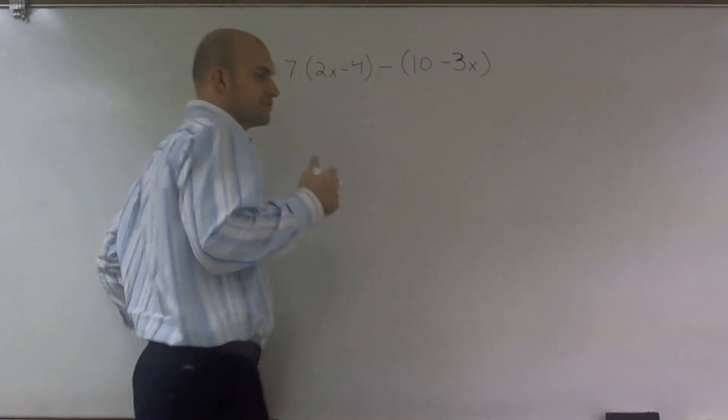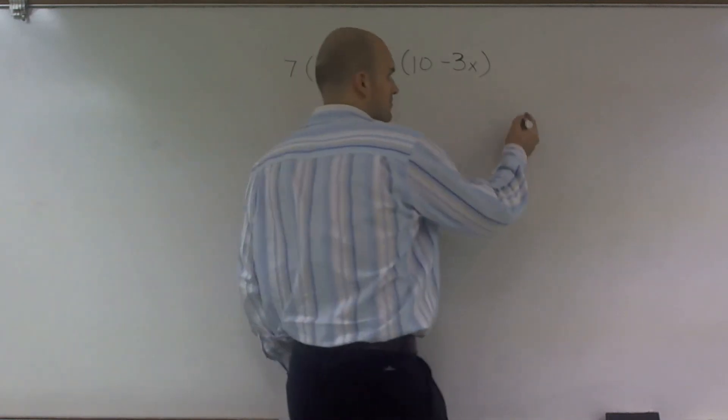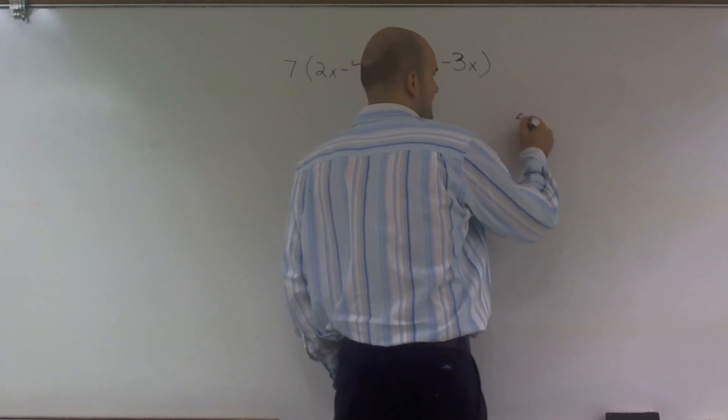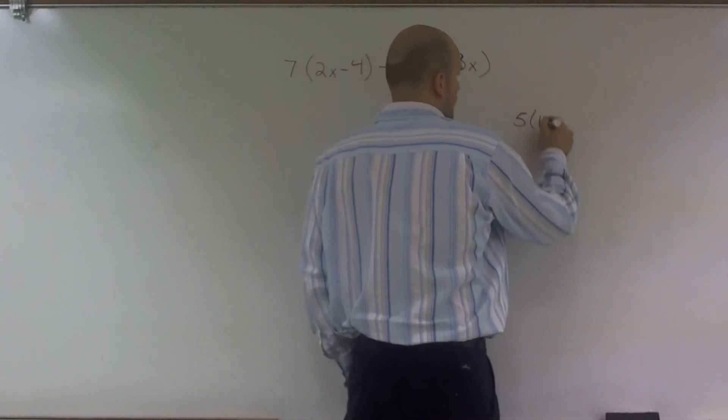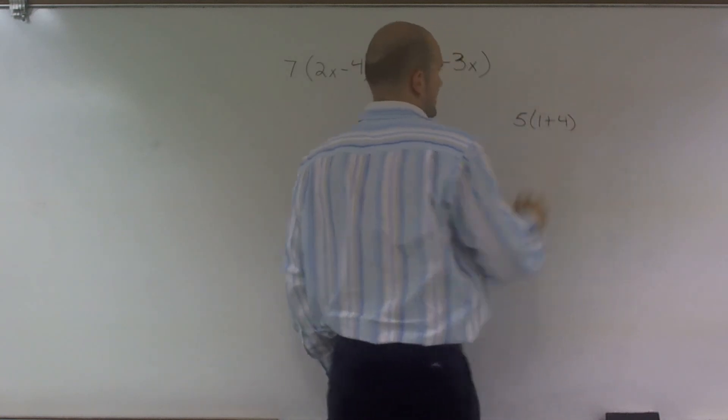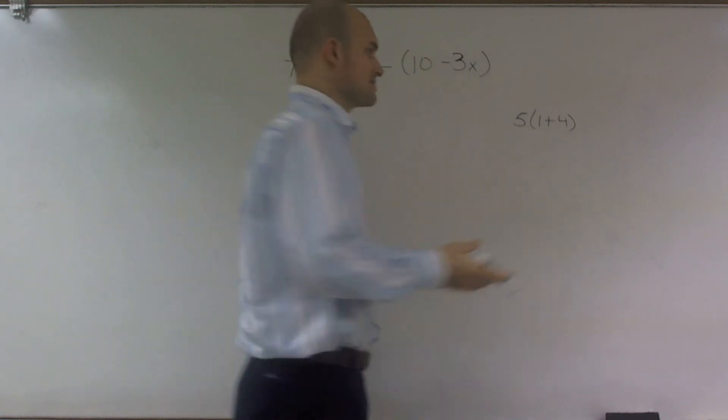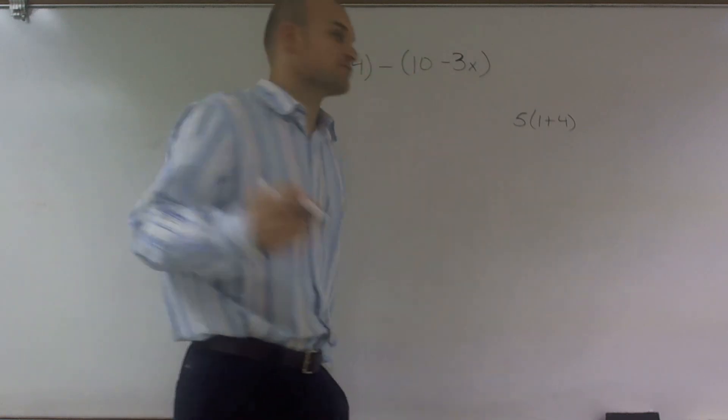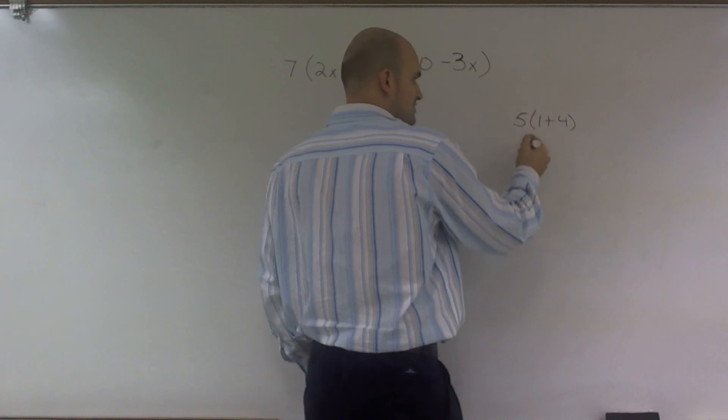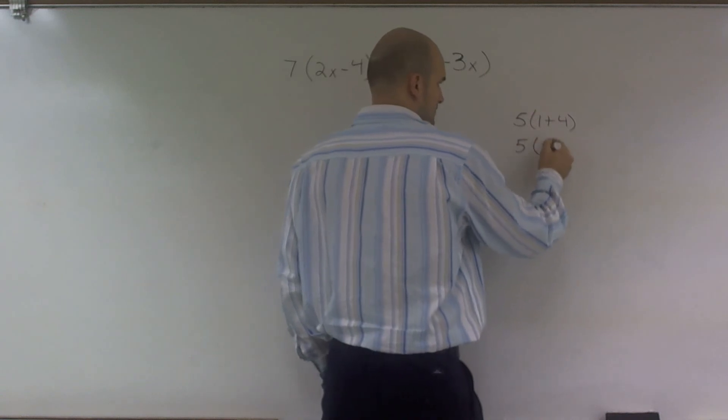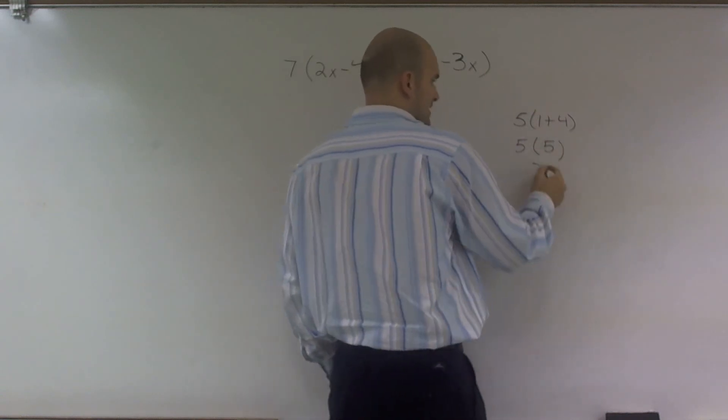The distributive property—let's say I have 5 times (1 + 4). What the distributive property says is, if you're going to use your PEMDAS rules, you'd say 1 plus 4 is 5, which we know gives us 25.